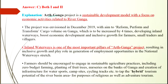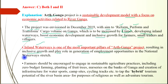The Arth Ganga project is a sustainable development model focused on economic activities related to river Ganga. The project was envisaged in December 2019 with the aim to reform, perform, and transform cargo volume on Ganga, to be increased by four times, through developing inland waterways for economic development and inclusive growth for farmers, small traders, and villagers. Inland waterways is one of the most important pillars. Farmers are encouraged to engage in sustainable agricultural practices including zero budget farming, planting fruit trees, nurseries on the bank of Ganga, and creation of infrastructure for water sports, campsites, cycling tracks, etc., to tap the tourism potential of the river basin for religious as well as adventure tourism.